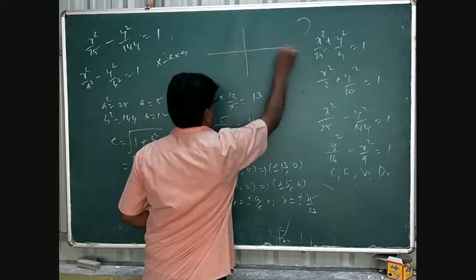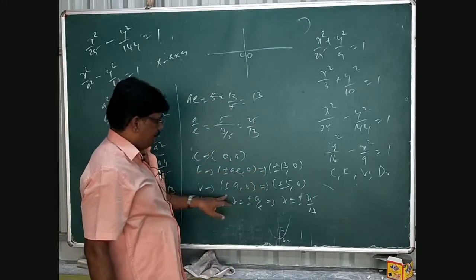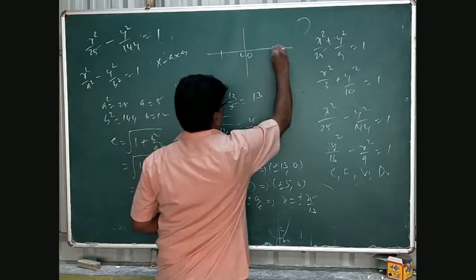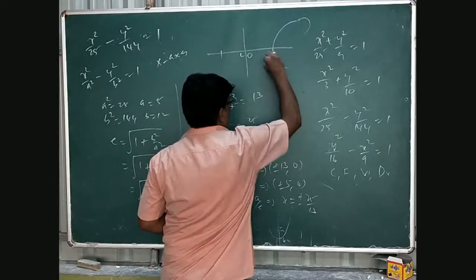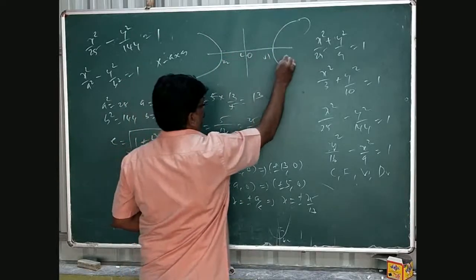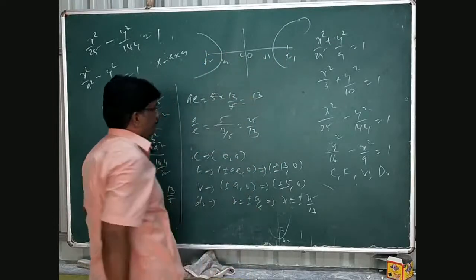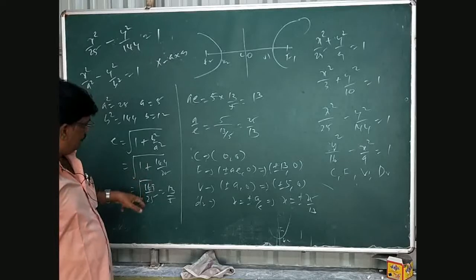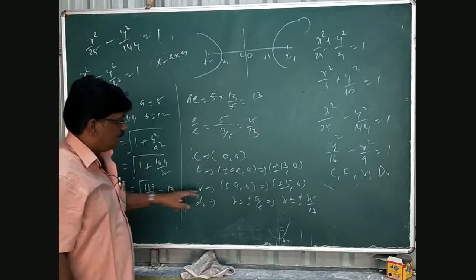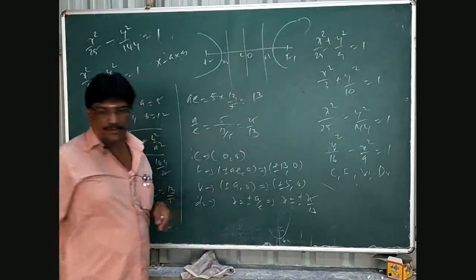So, this diagram. This is 0 for the center. Vertex is a, vertex x plus or minus 5 comma 0, so 5, 5 keep that. The hyperbola comes like this. This is V1, V2. Then focus comes here, F1, this is F2. That is it. This is the diagram, and direct vertex comes inside. This is the diagram.